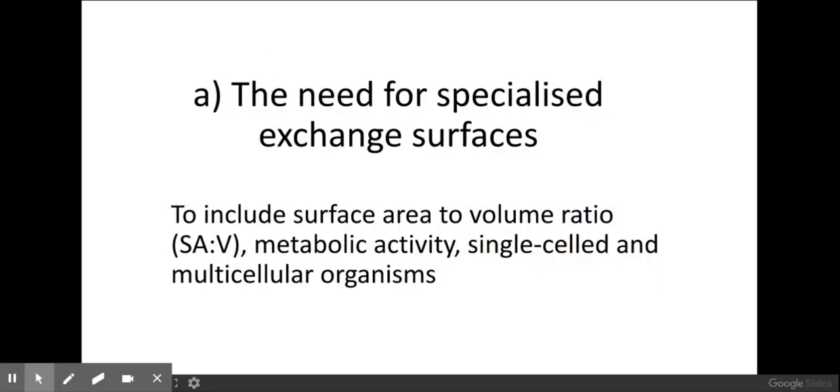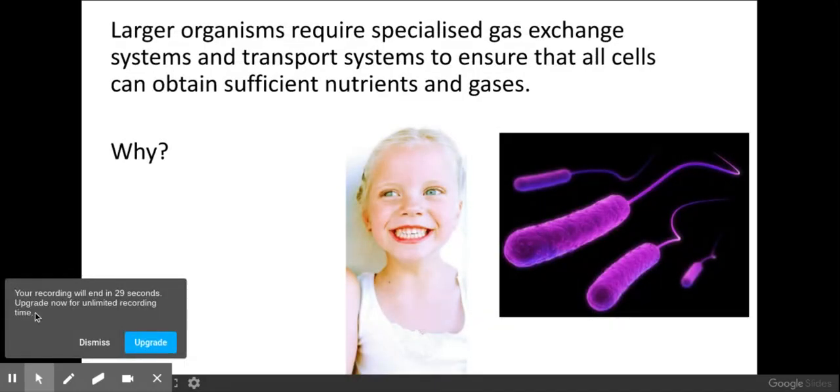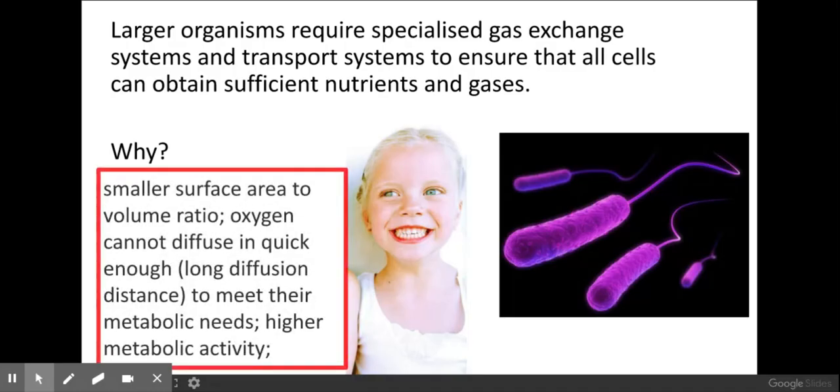Very lastly, we need to apply what we've learned here to organisms. As I mentioned before, a multicellular organism such as ourselves, such as a human, has a small surface area to volume ratio. Therefore we need specialized gas exchange systems in order to transport and exchange gases. The reason for this is that oxygen cannot diffuse through our skin quick enough because there's a long diffusion distance to meet our metabolic needs. We also have a much higher metabolic activity.